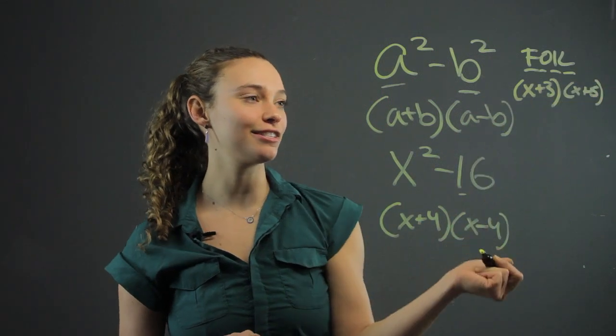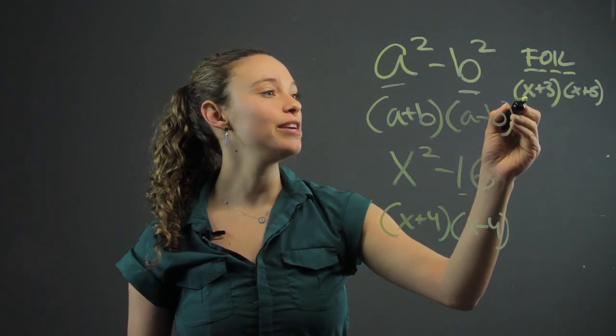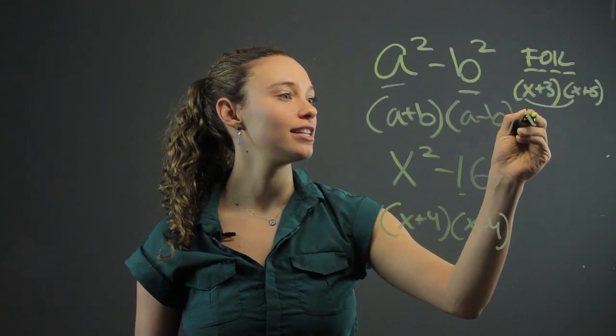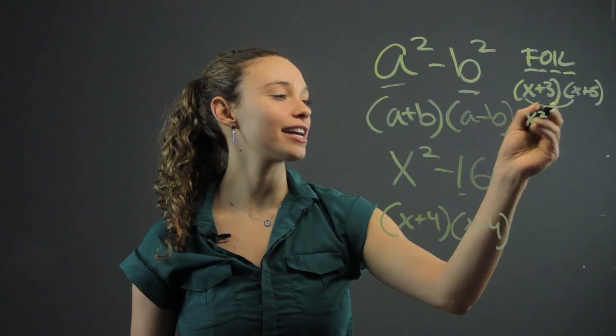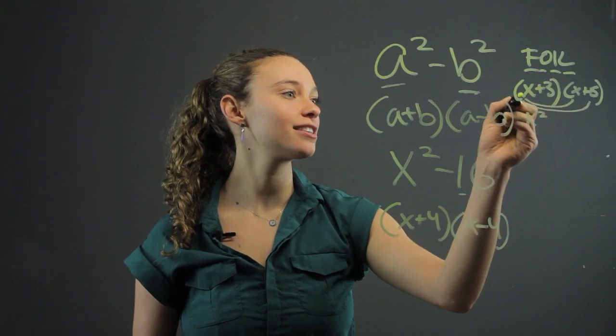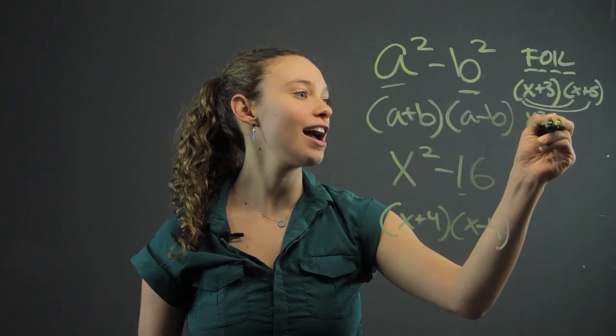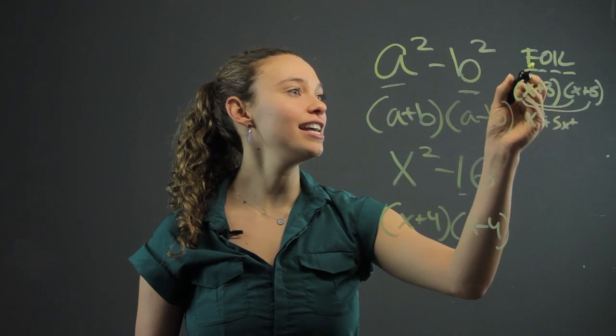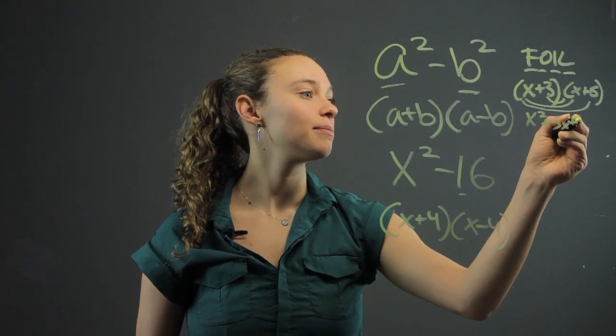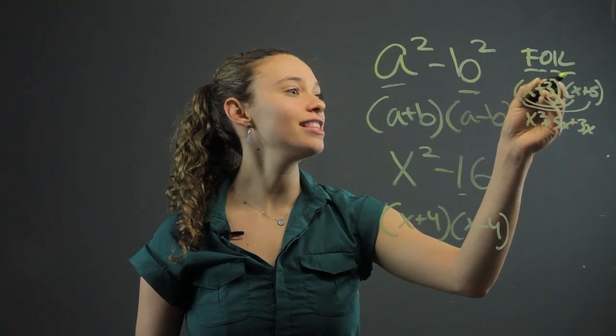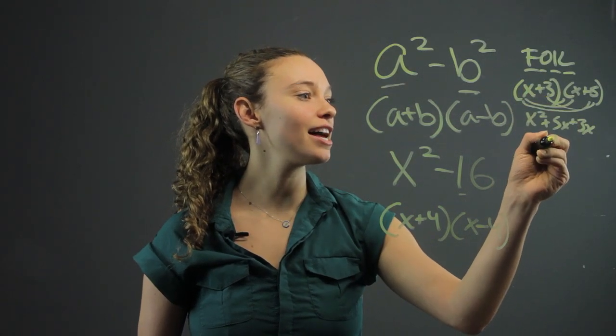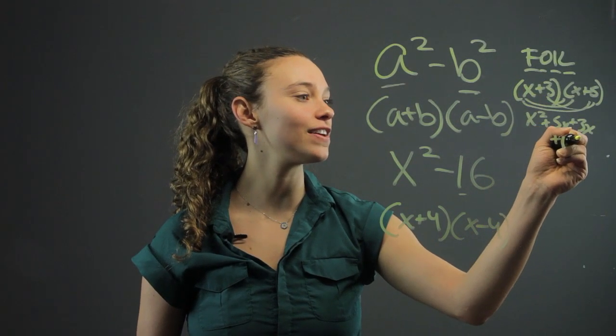We're multiplying these two binomials. So we use the front terms first. That's going to be x squared, x times x. The outside terms next, that's plus 5x. Then the inside terms, plus 3x. Then the last terms, plus 3 times 5 is 15.